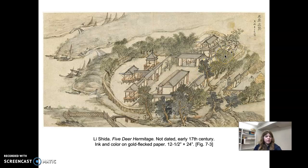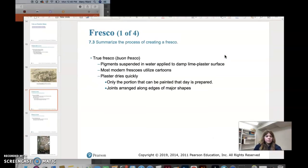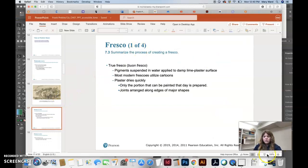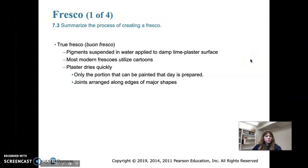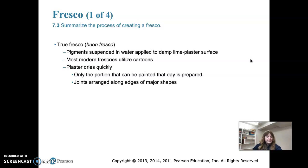In true fresco, pigments are suspended in water and applied to a damp lime plaster surface, typically on a wall. Old school walls made of lime plaster — as it's being put up and drying, water-based pigments are painted onto the damp surface. The vehicle is water, and the binder is the lime present in the damp plaster.